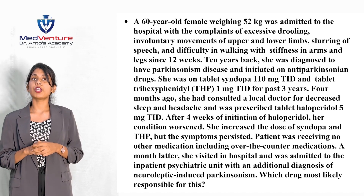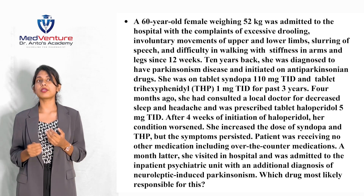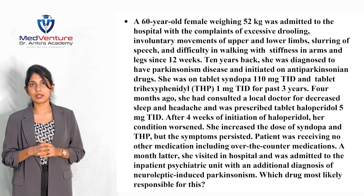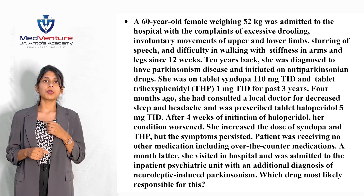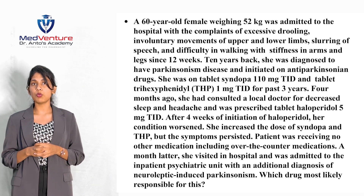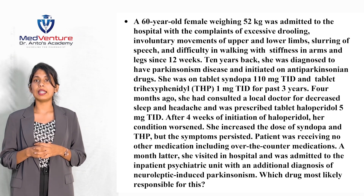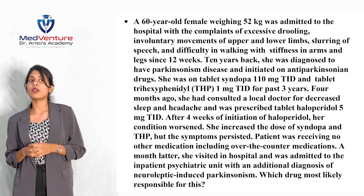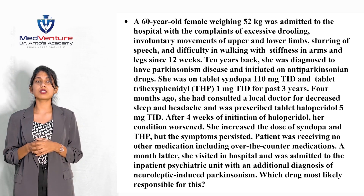Case: A 60-year-old female weighing 52 kg was admitted with excessive drooling, involuntary movements of upper and lower limbs, slurring of speech, and difficulty walking with stiffness since 12 weeks. She was diagnosed with Parkinson's disease 10 years ago and was on Sindopa 110 mg TID and Trihexyphenidyl 1 mg TID for 3 years. Four years ago she was prescribed Haloperidol 5 mg TID by a local doctor for sleep problems and headache; after 4 weeks her condition worsened even after increasing the dose of Sindopa and THP.